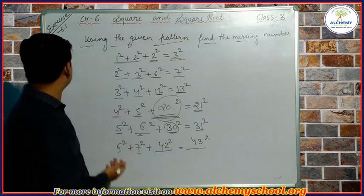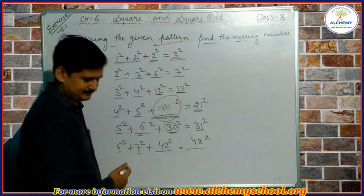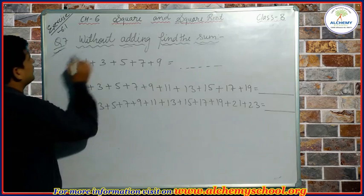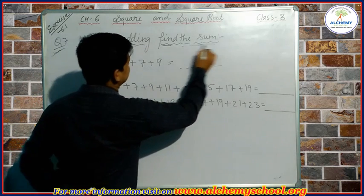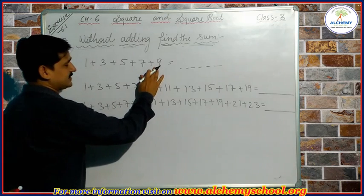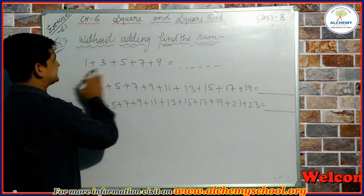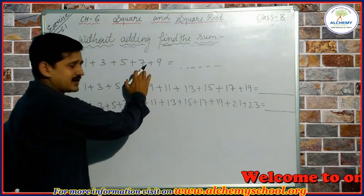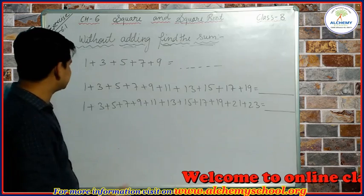Let's see the next question, which is question number 7. According to question number 7, we have to find the sum of some given numbers without adding them. Some numbers are given and we have to find their sum without actually adding them. Let's discuss how we can find it.